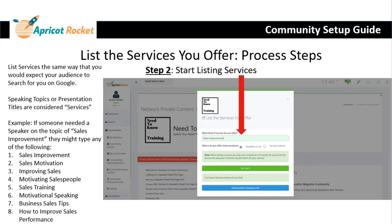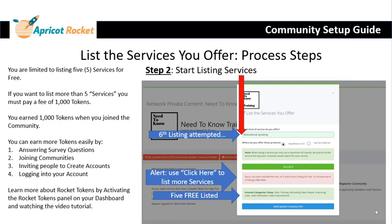So if somebody needed to find a speaker on the topic of sales improvement, they might type any of the following: sales improvement, sales motivation, improving sales, motivating salespeople, sales training, motivational speaking — there are a lot of different things they could type. You're limited to six free listings. If you want to list more than six, each additional listing has a cost of 1,000 tokens, and you earned 1,000 tokens when you created your account. You can easily earn more tokens through a variety of activities. Go to your dashboard, look for the button that says 'Activate Rocket Tokens,' watch that video, and you'll learn more about earning tokens.